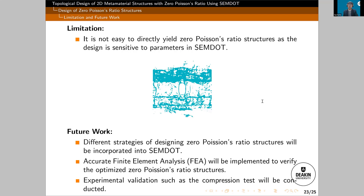We still need to put more effort in to get a more robust method. Future work includes incorporating different strategies for designing zero Poisson's ratio structures into SimDot, implementing higher-order finite element analysis in MATLAB to verify the optimized structures, and eventually pursuing experimental validation to confirm whether the structures truly achieve zero Poisson's ratio.